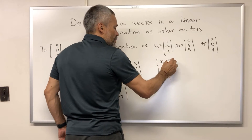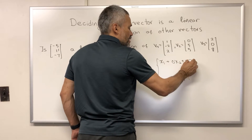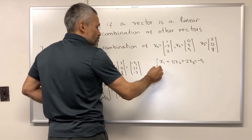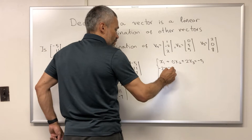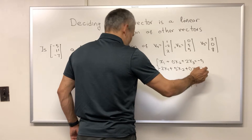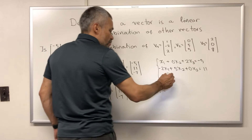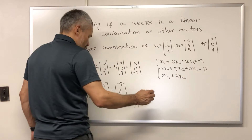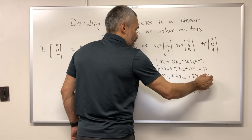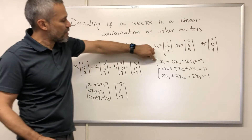The system is: x1 plus 0x2 plus 2x3 equals negative 5, and negative 2x1 plus 5x2 plus 0x3 equals 11, and 2x1 plus 5x2 plus 8x3 equals negative 7. To decide if this vector is a linear combination of these three, you end up solving this system.